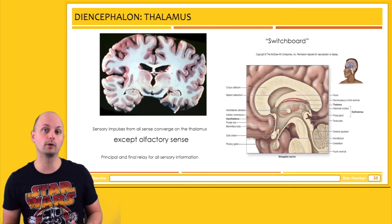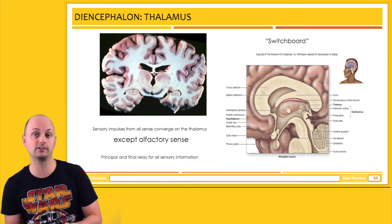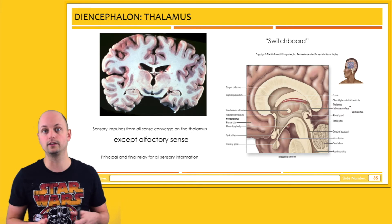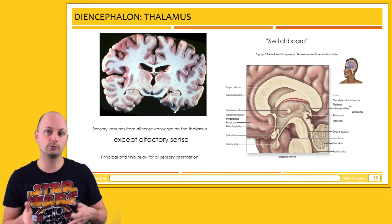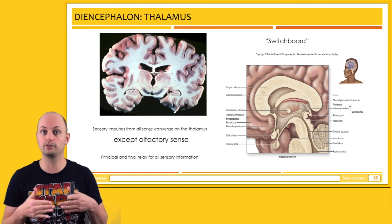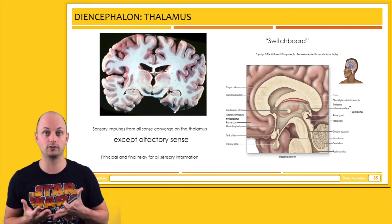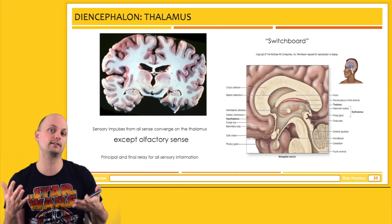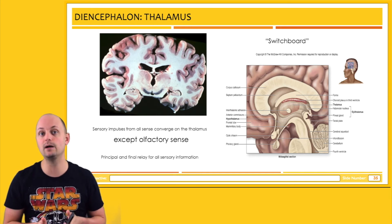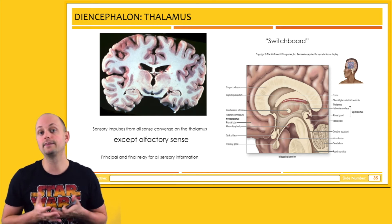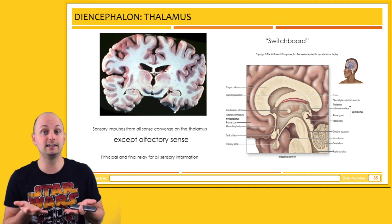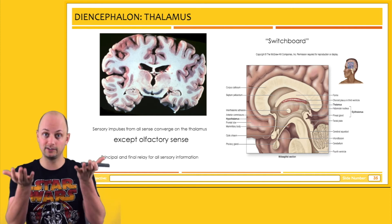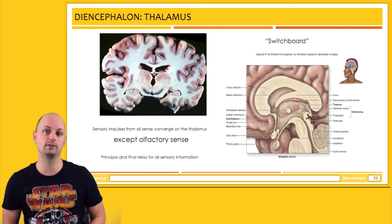The thalamus will become more important in our next unit on sensory systems, because all sensory information passes through the thalamus. But more than 90 percent of that sensory information we collect from the external environment actually gets filtered — it never makes it up to the primary somatosensory cortex in the parietal lobe. A lot of that filtering happens in the thalamus, which is why this region has been described as a kind of switchboard, filtering signals ascending to the brain.